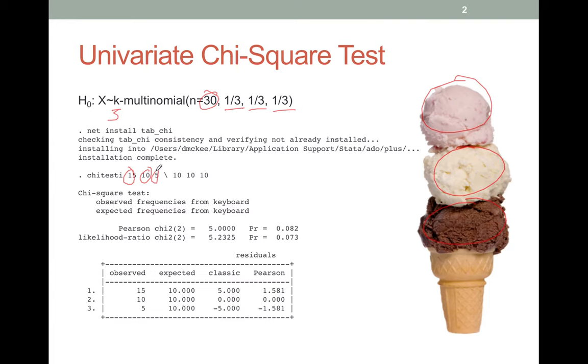Under the null hypothesis that means that we would expect to get ten people liking each flavor. If we call these the pi's, so we've got p1, p2, and over here we have p3.